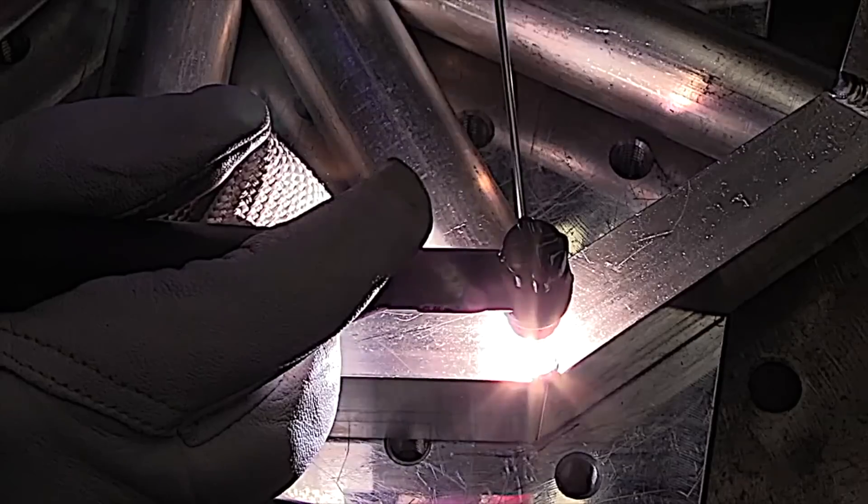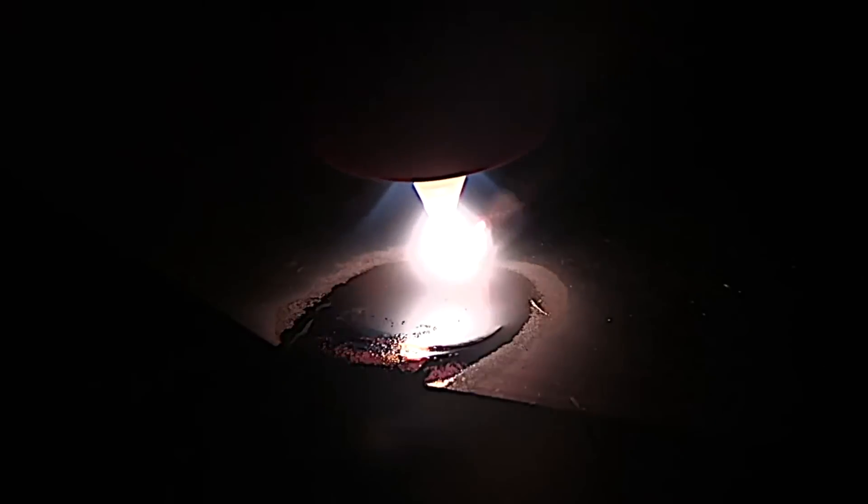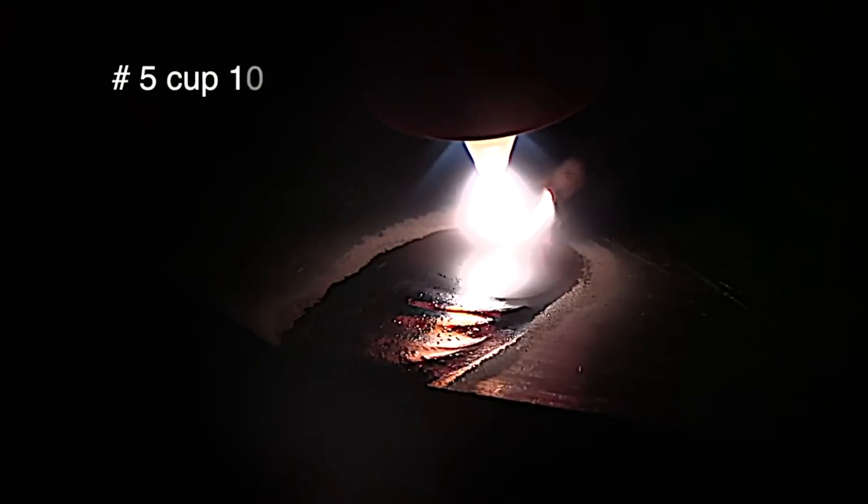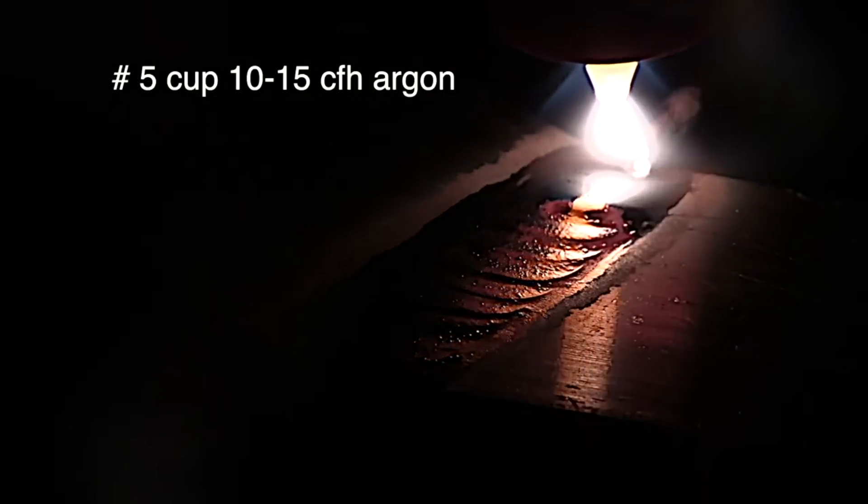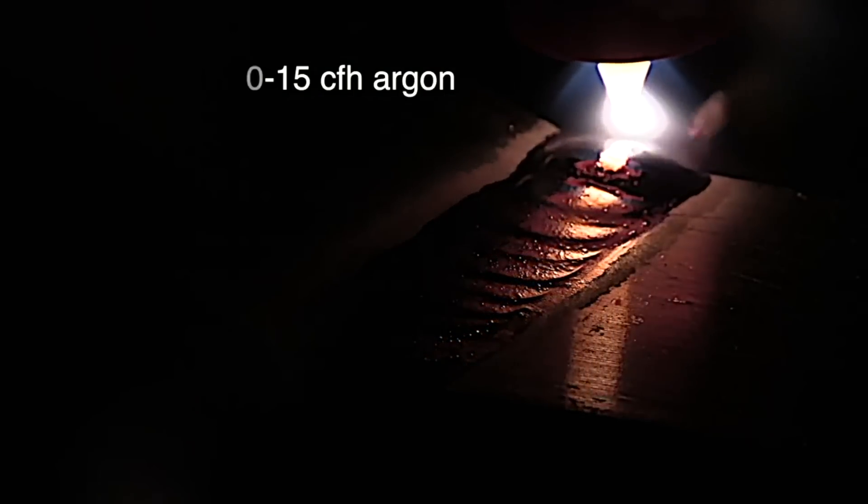There's a purpose for every cup. You know, if one size does not fit all, the number five cup is great for aluminum butt joints. It can actually help with penetration by limiting that cleaning action and kind of focusing the energy on the puddle.